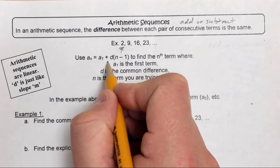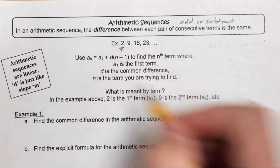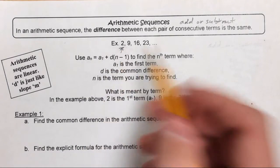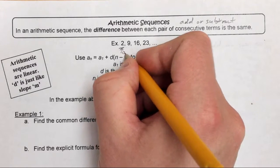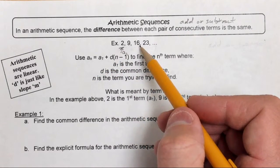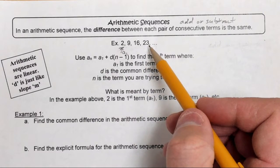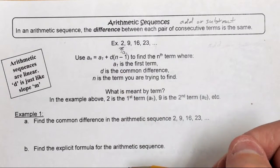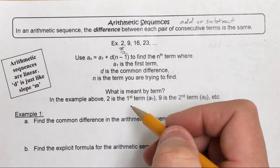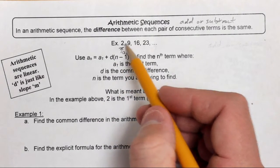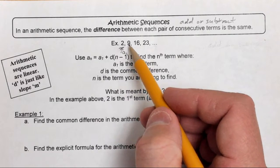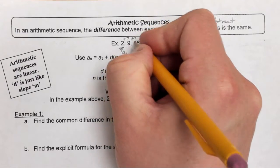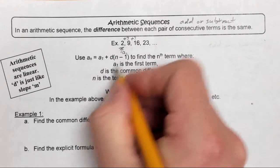The equation is a sub n equals a sub 1 plus d times n minus 1, where a sub 1 is the first term. In this example, 2 is my first term, 9 is my second term, 16 is my third term, and 23 is my fourth term. Then d is the common difference. Looking from 2 to 9, we're adding 7 each time, so d equals 7.